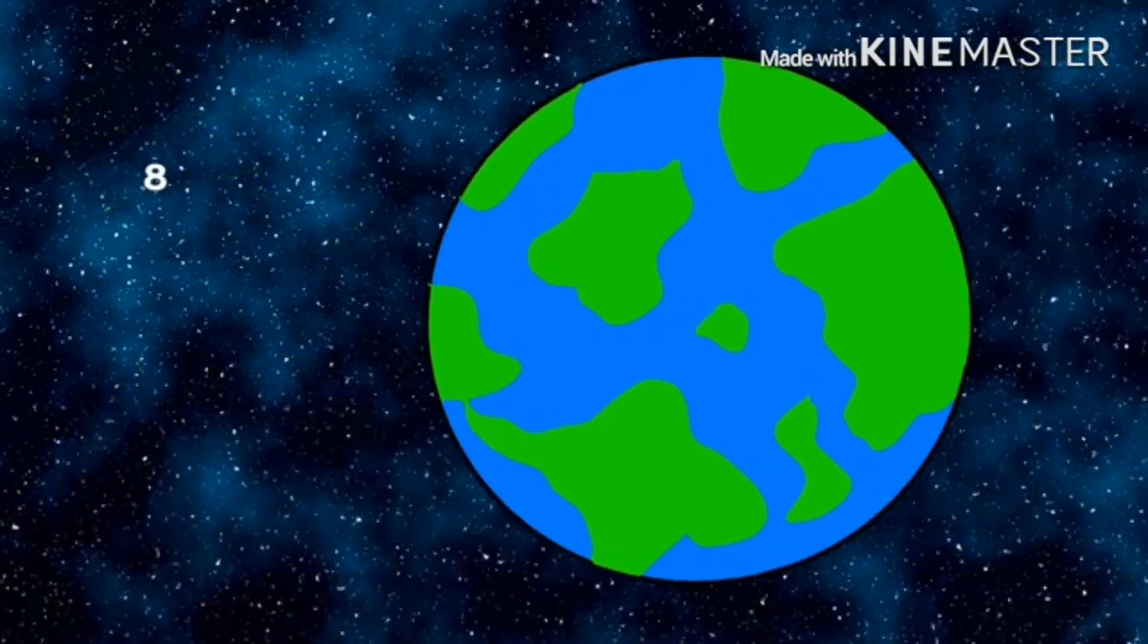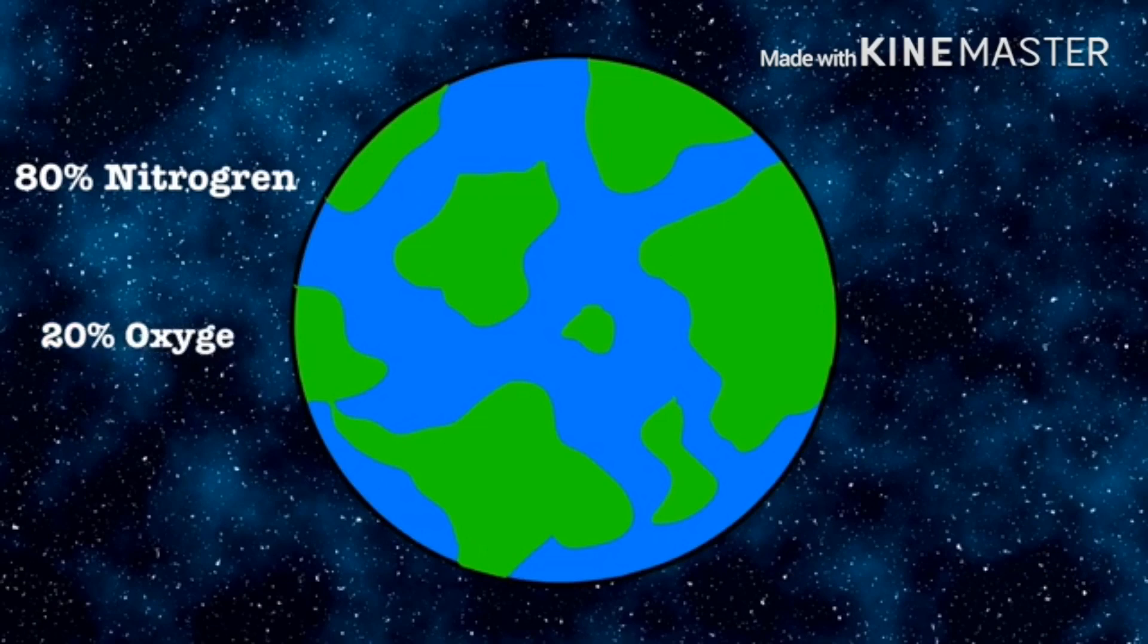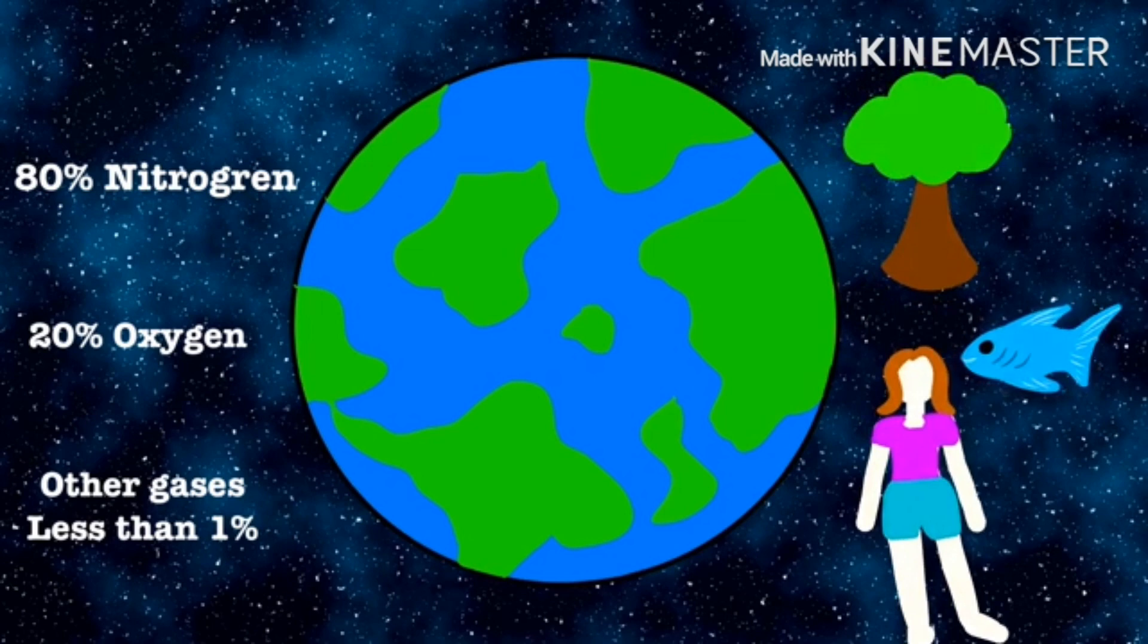Today, the Earth's atmosphere is 80% nitrogen, 20% oxygen, and other gases make up less than 1%. The world is full of plants and there are many animals living on Earth.